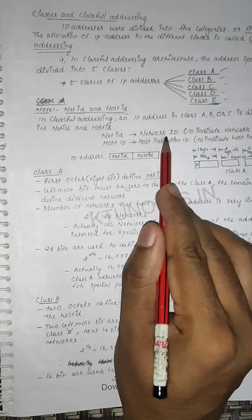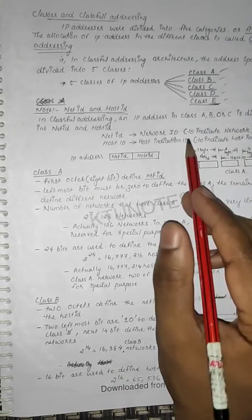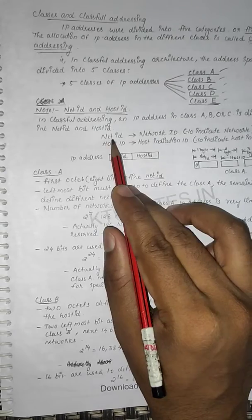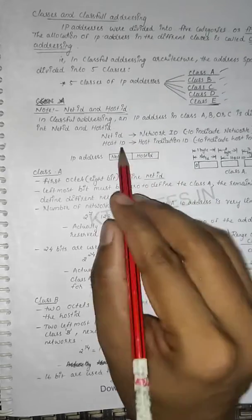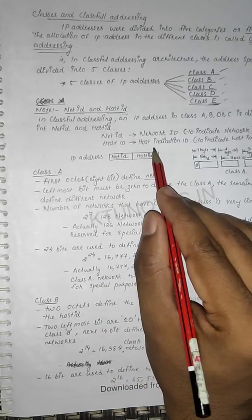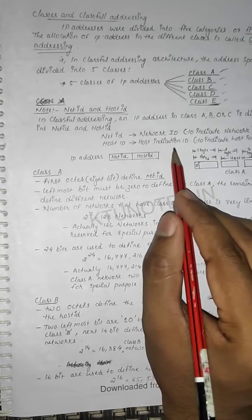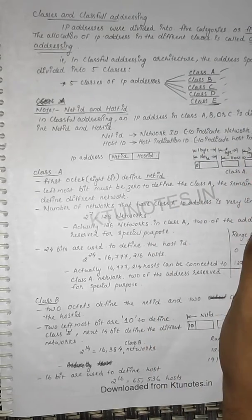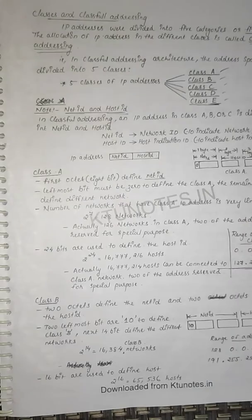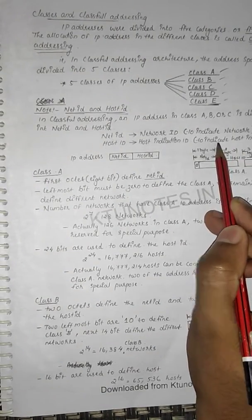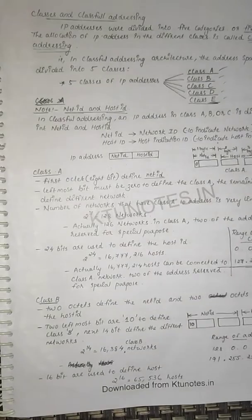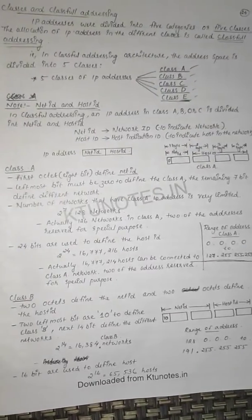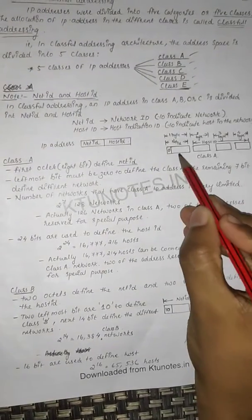The Network ID indicates which network the device resides in. The second portion is the Host ID — the host identification ID — to indicate the host within the network. The IP address has this format: a Net ID part and then a Host ID part.